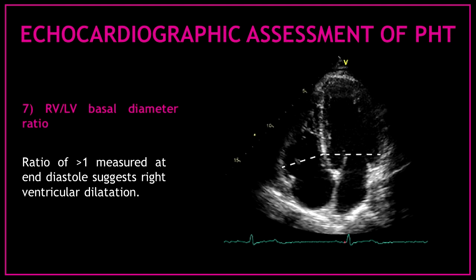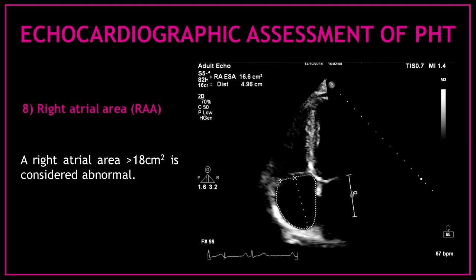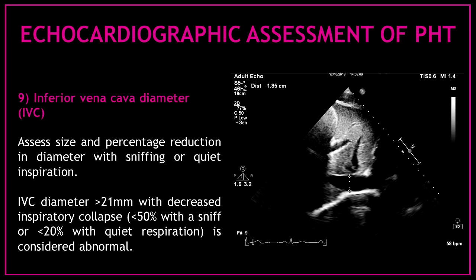Marker seven is the right ventricular to left ventricular basal diameter ratio; a ratio of more than 1 measured at end diastole suggests right ventricular dilatation. Marker eight is the measurement of the right atrial area; a right atrial area more than 18 cm squared is considered abnormal. Marker nine is the assessment of the inferior vena cava diameter. An inferior vena cava diameter more than 21 mm with decreased inspiratory collapse — less than 50% with sniff or less than 20% with quiet respiration — is considered abnormal.